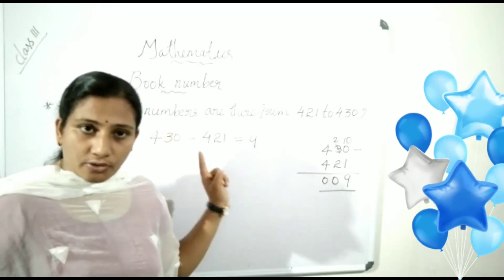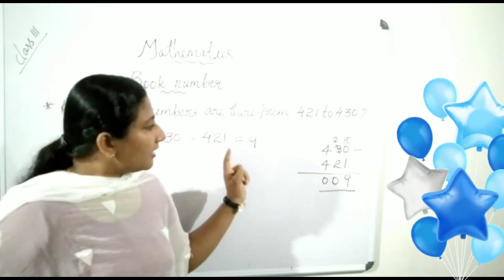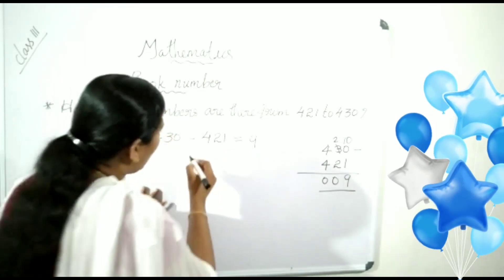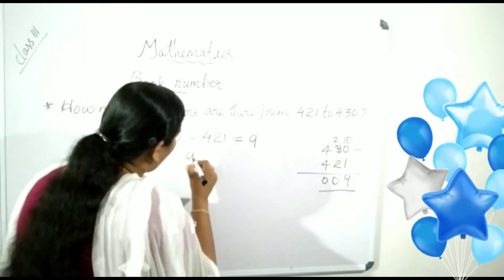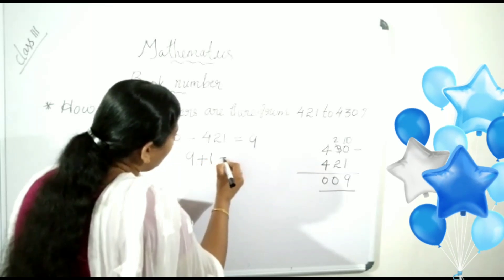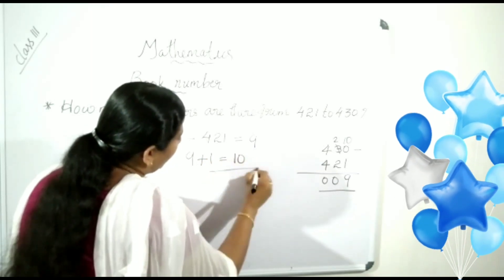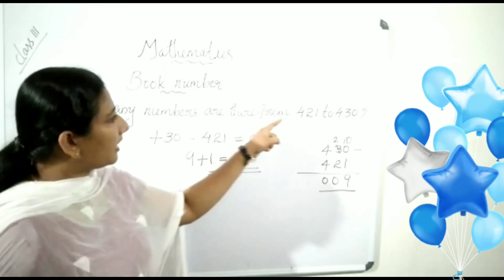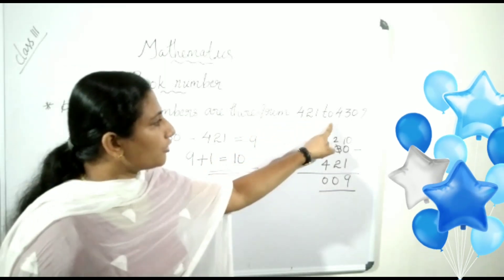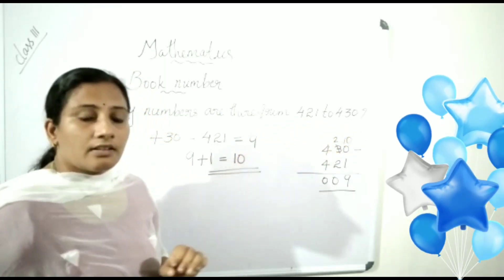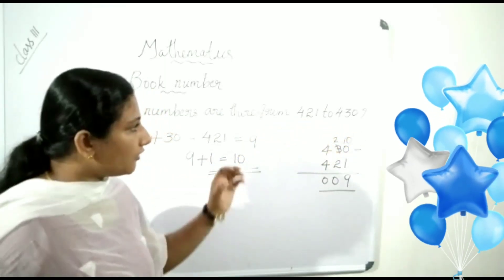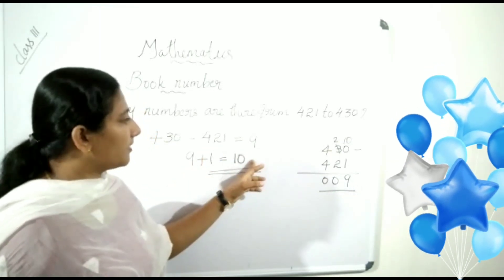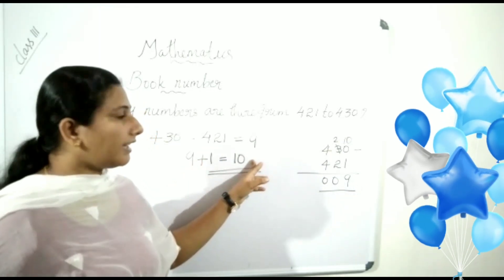Is the answer 9? No. When we subtract, we need to add 1 to get the correct answer. So, we add 1 with 9. So, 10 is the answer. How many numbers are there from 421 to 430? There are 10 numbers.